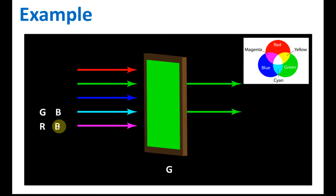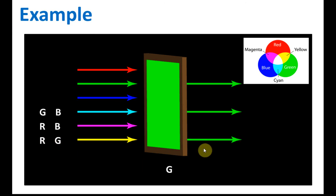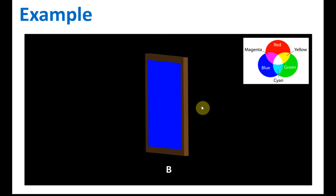And magenta — magenta is red and blue — both will be blocked. Yellow is the combination of red and green: red will be blocked, green is allowed to pass through, and therefore the light that comes out is green.